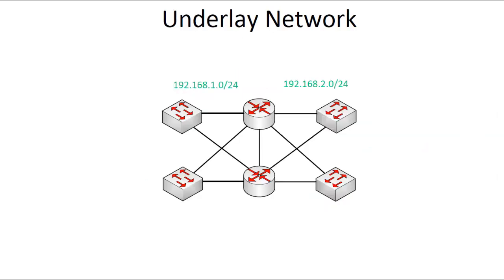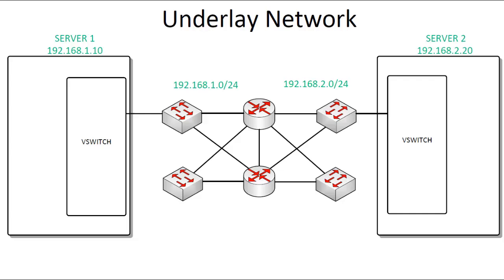Now let's look more specifically at how this might look in a real network — the underlay network. This network has two routers separating two layer 2 rack switches. There are only two subnets: 192.168.1.0/24 on the left side and 192.168.2.0/24 on the right side. This network infrastructure is often referred to as the underlay network. There are two physical servers: Server 1 on the left is assigned IP address 192.168.1.10, and Server 2 on the right is assigned 192.168.2.20. These servers will have a hypervisor installed — for example KVM, ESXi, or Xen — and virtual switches for VM network connectivity.